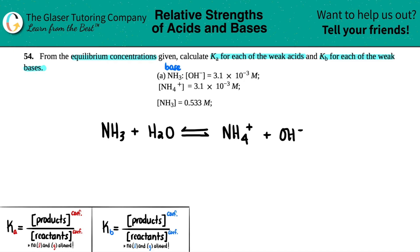For both NH4+ and OH-, I have 3.1×10^-3 molarity, and for my ammonia I have 0.533 molarity.